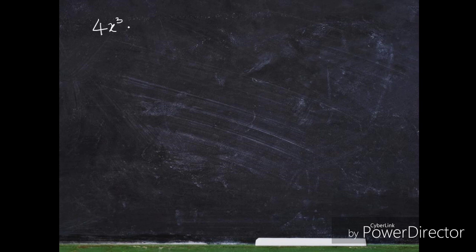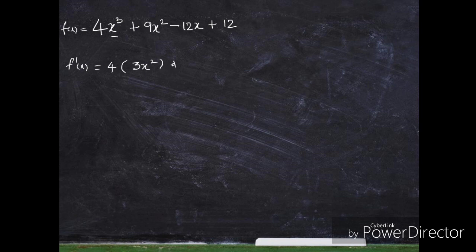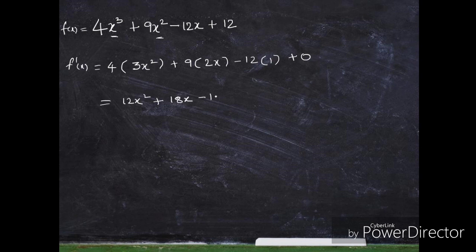Moving on to the problem. The question is f of x equals 4x cubed plus 9x squared minus 12x plus 12. So f dash of x: the derivative of x cubed is 3x squared, plus 9 into x squared derivative is 2x, minus 12 into x derivative is 1, plus 12 derivative is 0. So f dash of x equals 12x squared plus 18x minus 12.